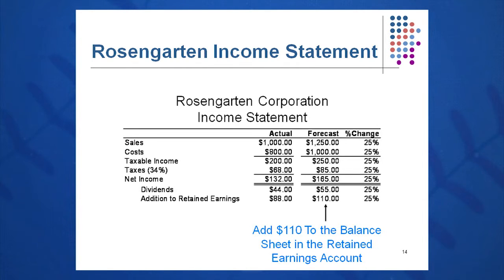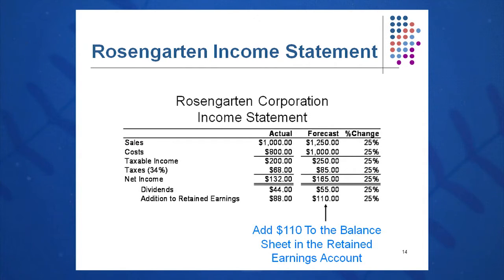Costs last year were 80% of sales. Using this percent of sales approach, we're going to forecast next year's costs. Last year, costs were 80% of sales; this year, costs will be 80% of sales. So I take 80% of the new $1,250 sales figure and get $1,000 of cost. The alternate way would be to take $800 times 1.25 and get $1,000. By subtraction, $1,250 minus $1,000 equals $250 of taxable income.